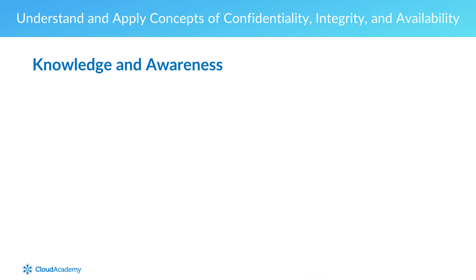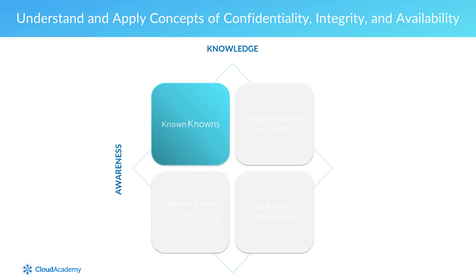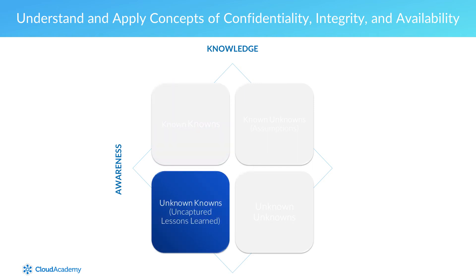Throughout all cycles of operations, we're going to have to deal with different kinds of knowledge and whether we have conscious awareness of it. Let's talk about knowledge and awareness, dividing things into four different buckets. We have known knowns — things that we know and are conscious that we know; we've captured them and are able to make use of them. We have unknown knowns, which are uncaptured lessons learned — part of the body of corporate information and experience that simply hasn't been captured such that we can actualize them.